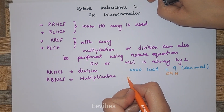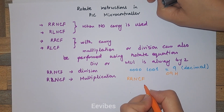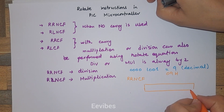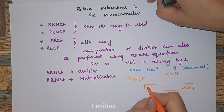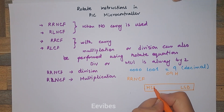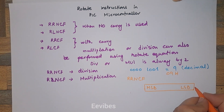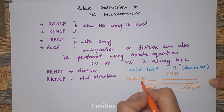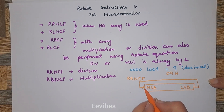When you perform the rotate right not with the carry, here you have the LSB and the most significant bit. What it does is the LSB will go into the MSB.